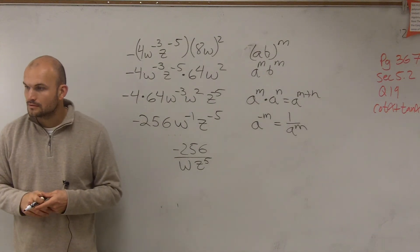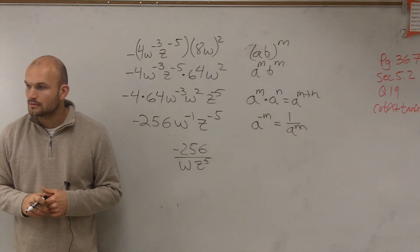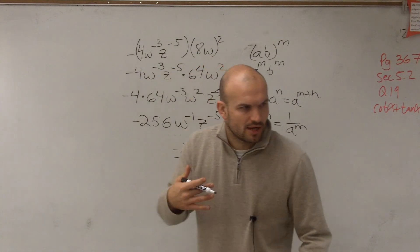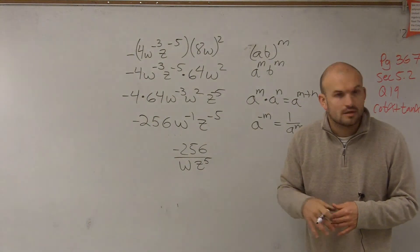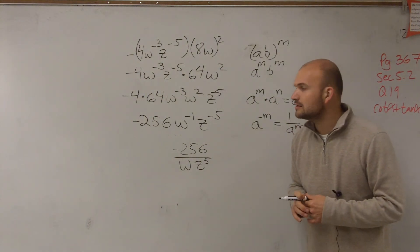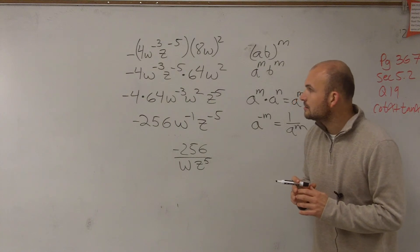A student asks a question that needs to be repeated for the class: Why don't you multiply 64 times 2z?